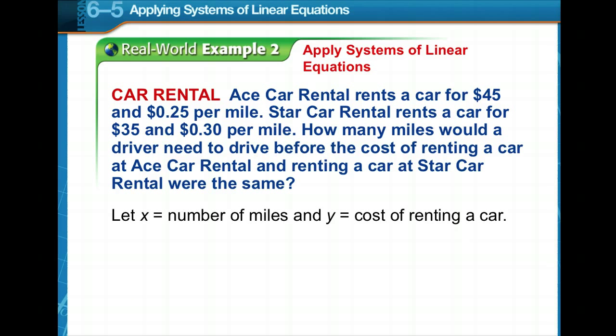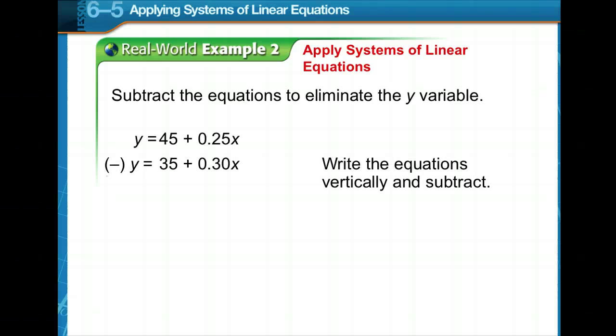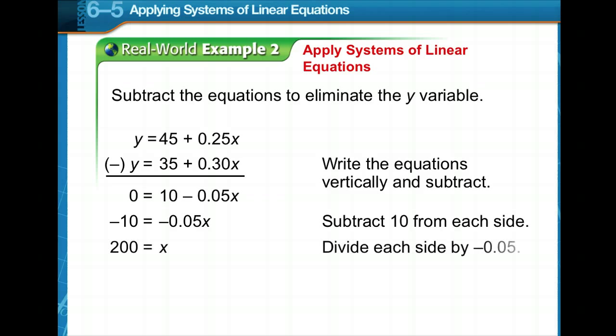We're going to let x equal the number of miles and y is going to be the cost of renting a car. We have our two equations. So we're going to subtract the equations because we can eliminate the y variable. They were both positive 1 coefficients. Zero is equal to 10 minus 0.05x. Subtract 10 from both sides. Multiply both sides by what is with the variable. x is equal to 200.